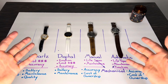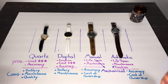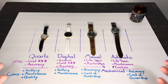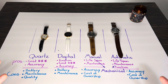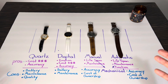Welcome to another episode of Wristwatch Diaries, where we simply talk about watch-related topics. On today's channel, we're going to get down to the very basics of watchmaking and watch manufacturing — defining what is the difference between your traditional quartz, digital, manual, and automatic watch.